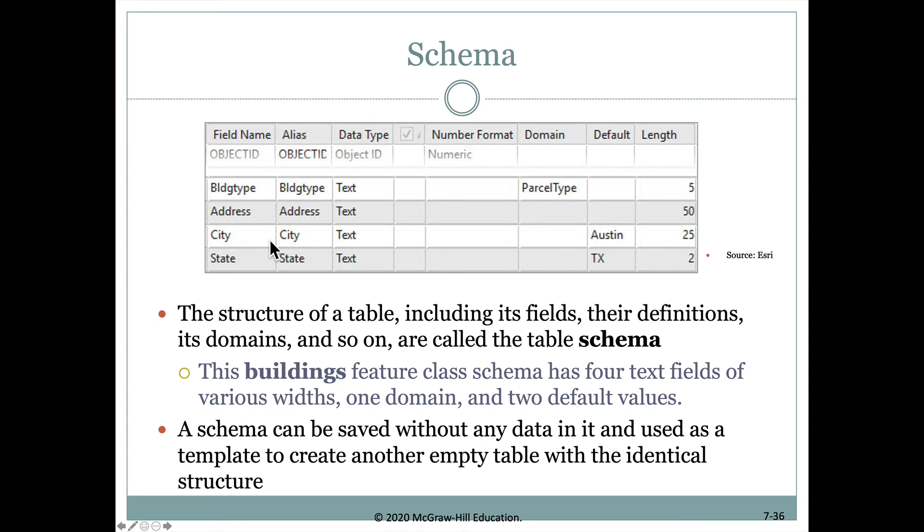For some of these values, we might know ahead of time that this data is being collected in Austin, Texas, so we can automatically set the default for the city to be Austin and the state to be Texas. If we have one parcel type that occurs much more often than others and we want to save the person entering data some typing, we could put in that most common parcel type as the default. The only warning is that sometimes people might just take the default without dropping down the entire menu and seeing their other options. The schema can be used for this sort of application and can be saved as a template so that if you were creating a new one, you'd be able to use it for that as well.